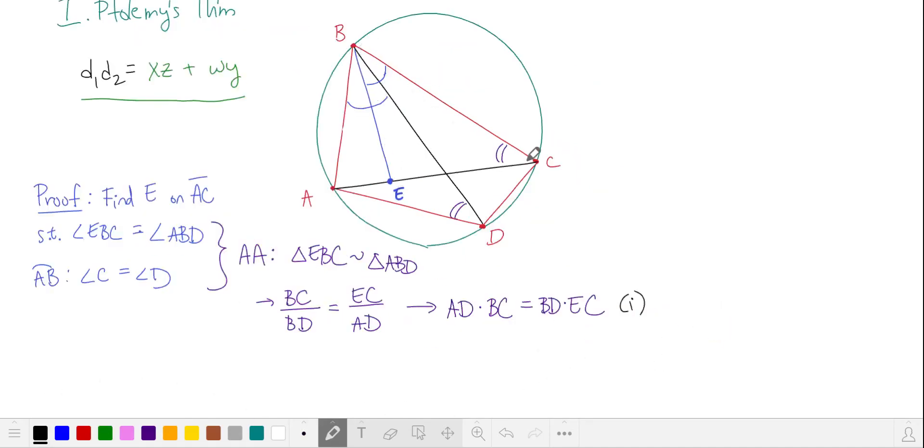Since EBC, the larger angle on the left, and ABD, the larger angle on the right, are congruent, and they both contain the small inner angle EBD, then we have these smaller angles on the left and right are equal to each other. So we have angle ABE is equal to angle CBD. And if you look at arc BC, we have that it is cut off by this angle at A and this angle at D. So we have angle CAB is equal to angle CDB.